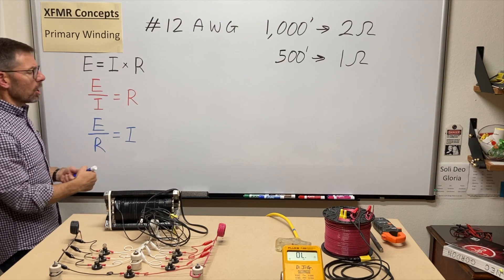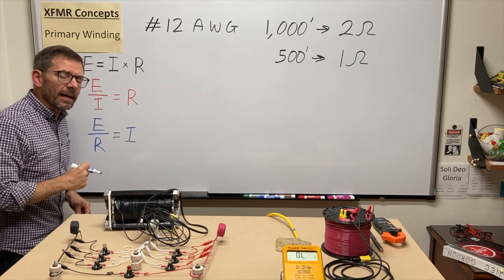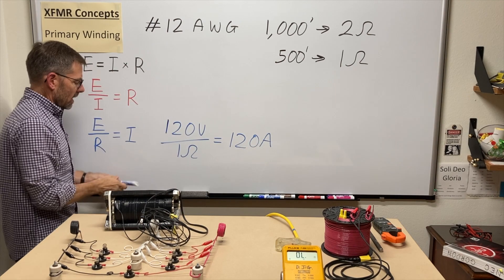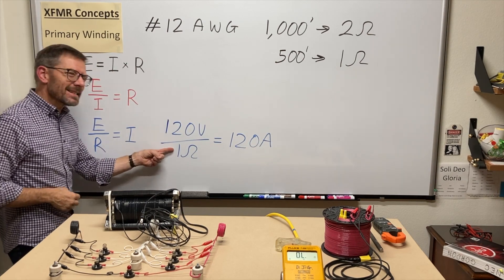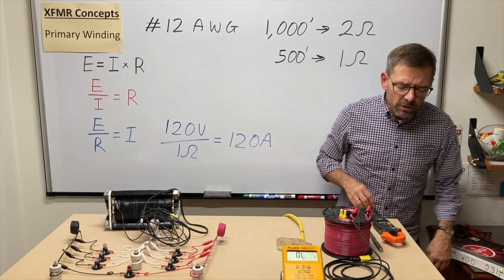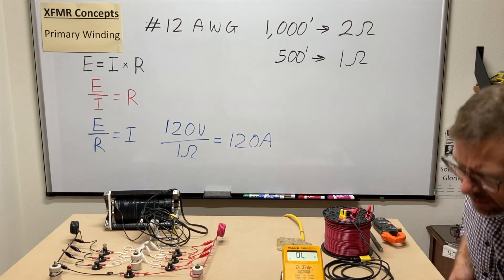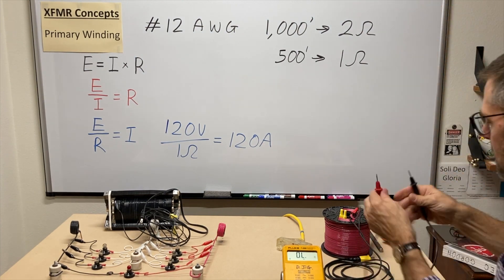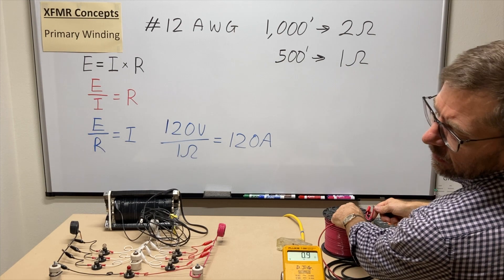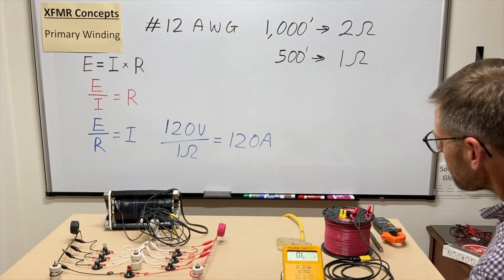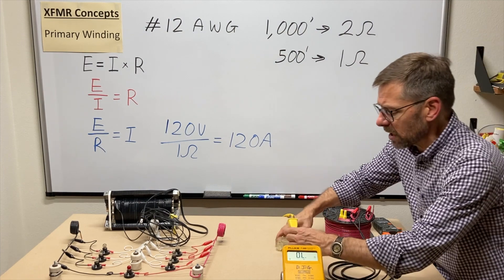And here I have Ohm's law written out. If I'm going to apply 120 volts across that coil, if it has one ohm of resistance, you might think that it would draw 120 amps. Now let's check it out. This meter auto senses between voltage and resistance. So we'll see what we've got here. And there we have it. 0.9, close enough.